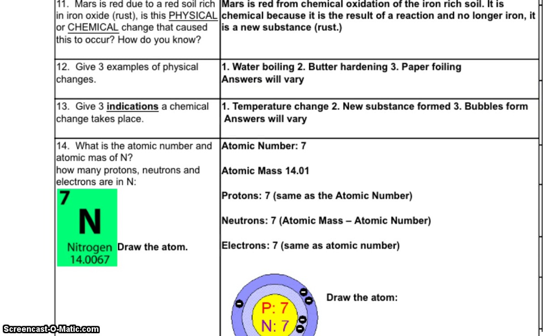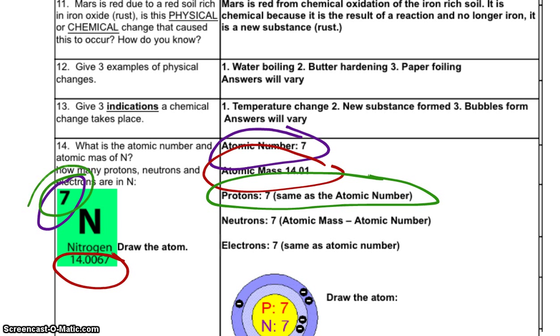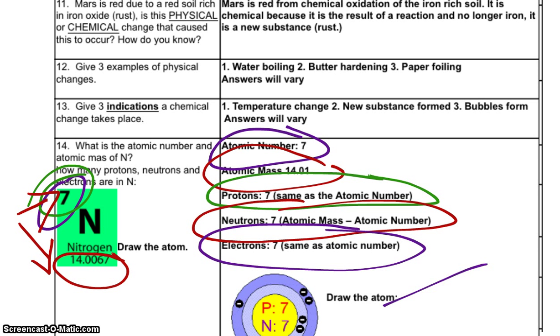Number 14. What is the atomic number and atomic mass of nitrogen, capital N? How many protons, how many neutrons, and electrons are in nitrogen? Well, over here in our answer area, we've got atomic number seven. See right here. We've got atomic mass, 14.01. And you can see it's close to 14.01 in the element square. Protons, seven. The number of protons is the same as the atomic number. And the number of neutrons, if we subtract seven from, or the atomic number from the atomic mass, we get the number of neutrons. And then electrons is usually the same as the atomic number, so it's going to be seven. And then we've got our drawing of the atom right here for nitrogen. Protons, seven. Neutrons, seven. And then our electrons are out in the cloud.